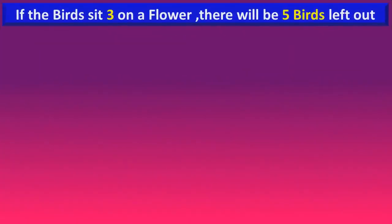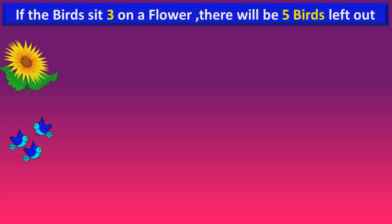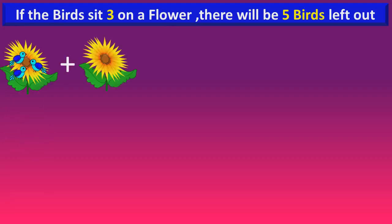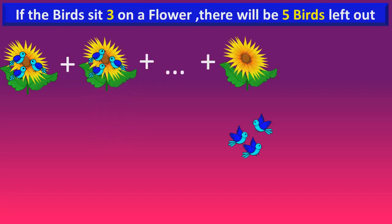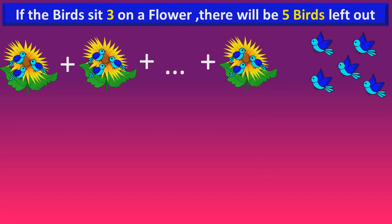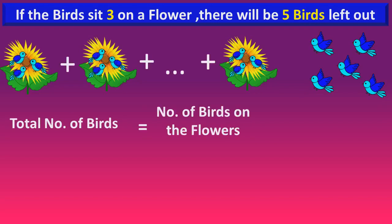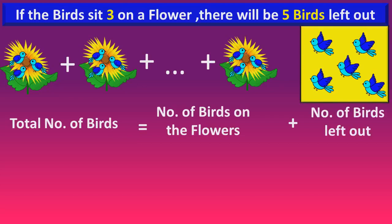It's given that if the birds sit three on a flower, there will be five birds left out. That means three birds are sitting on each flower. At a certain stage, all the flowers are over, and still there are five birds remaining. The total number of birds is equal to the number of birds on the flowers plus the number of birds left out.